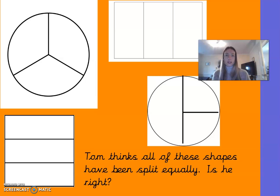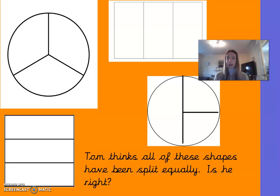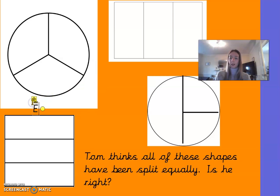Next, we have four different shapes split into different parts and Tom thinks that all of these shapes have been split equally. Do you agree with Tom? Pause the video and explain whether all of these shapes have been split equally and how you know. The circle has been split into three parts and each part is the same — this is equal.